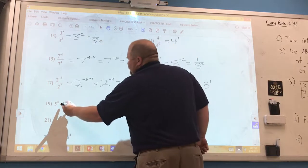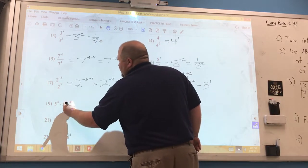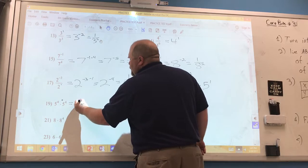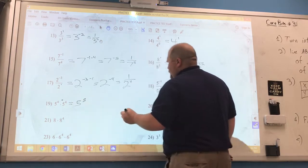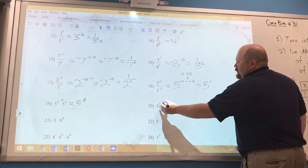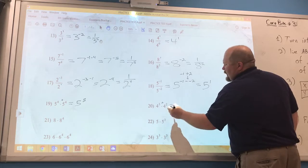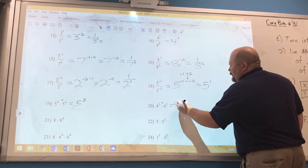Number 19, multiplying like bases again. So when you multiply like bases, you add the exponents, so we have 5 to the 8th. And number 20, we're multiplying like bases. That means we add the exponents, so 4 to the 5th.